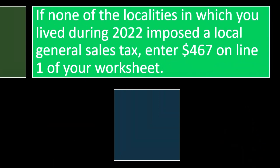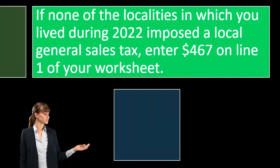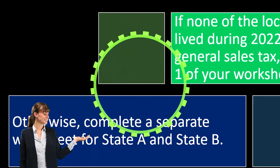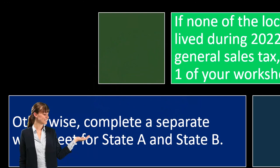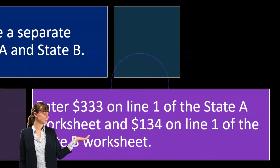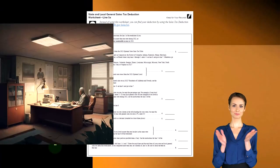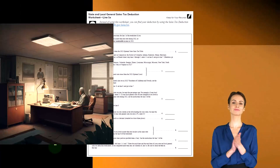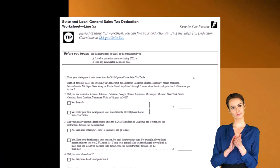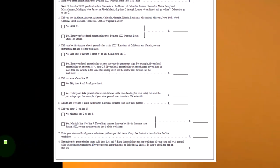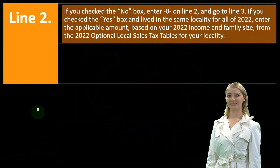If none of the localities in which you lived during 2022 imposed a local general sales tax, enter $467 on line one of your worksheet. Otherwise, complete a separate worksheet for State A and State B, entering $333 on line one of the State A worksheet and $134 on line one of the State B worksheet. The actual state and local general sales tax deduction worksheet is available to review in detail, and software in practice helps deal with these kinds of issues.